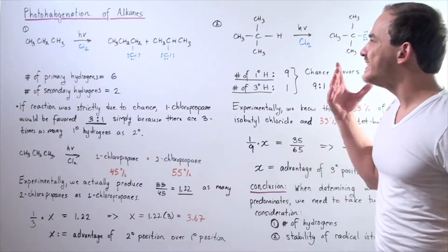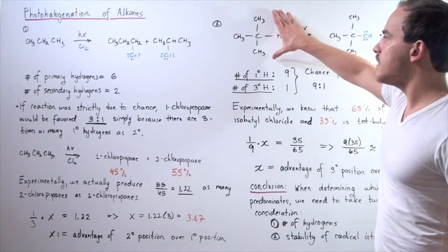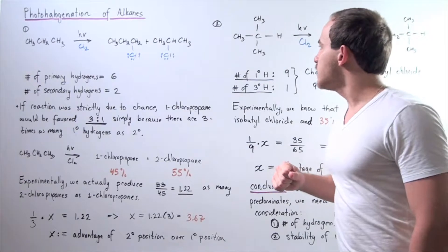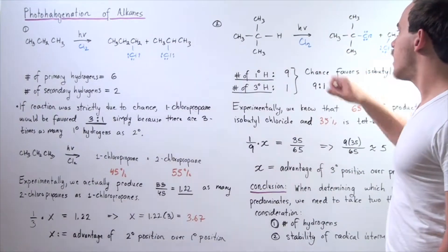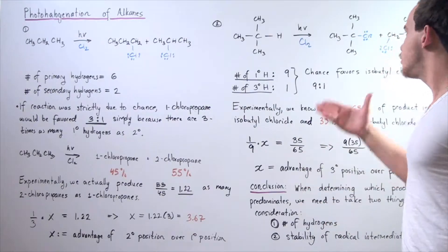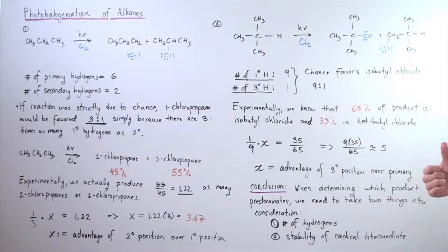So, let's move on to a different alkane. Let's look at this alkane. So, let's suppose we have our light source and we add our chlorine molecule. We produce the following two combination of products. We have our isobutyl chloride and we have our tert-butyl chloride shown here.